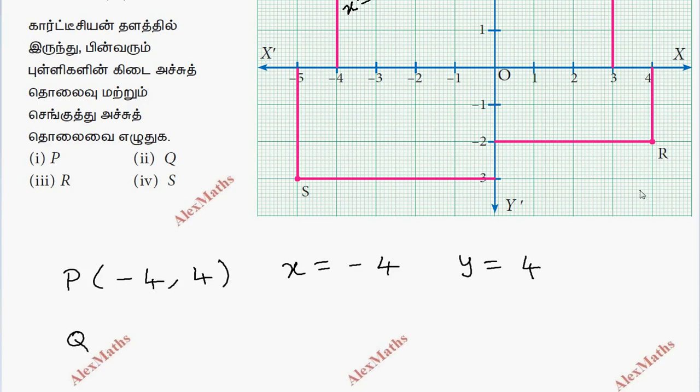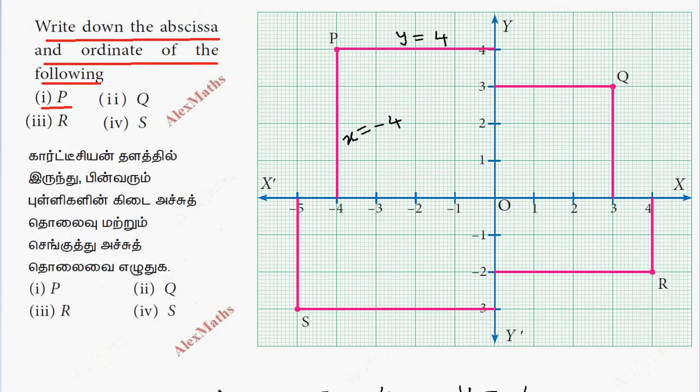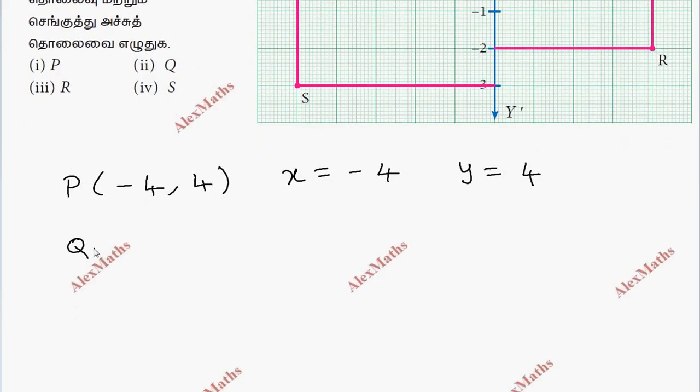Point Q, you can see here at this level you can get x equal to 3 on the vertical line and y equal to 3 on the horizontal line at the 3 level. Point Q is 3 comma 3 in the first quadrant, so abscissa is 3 and ordinate is 3.